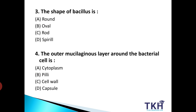Next, third question: the shape of the bacillus is — जो bacillus है वो हमें किस shape में दिखाई देते हैं? Option A: Round. Option B: Oval. Option C: Rod shape. Option D: Spiral shape. तो हमारा answer है Option C: Rod shape. जो bacillus है वो हमें rod shape के दिखाई देते हैं।